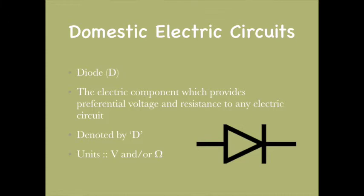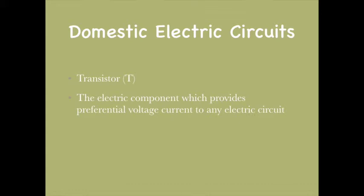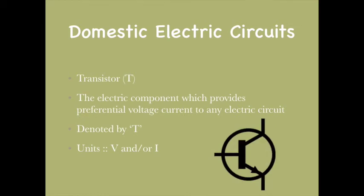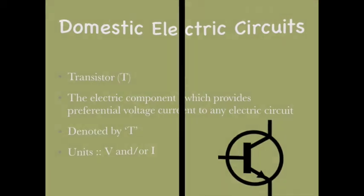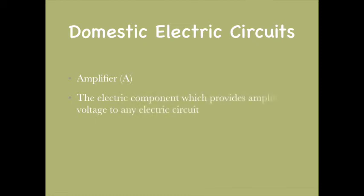The transistor is an electrical component which provides preferential voltage and current to any electrical circuit. It is denoted by T and units are V or A (amperes). It is a three-terminal device. The last component is the amplifier, which amplifies the voltage of an electrical circuit. It is denoted by A, with units of voltage.